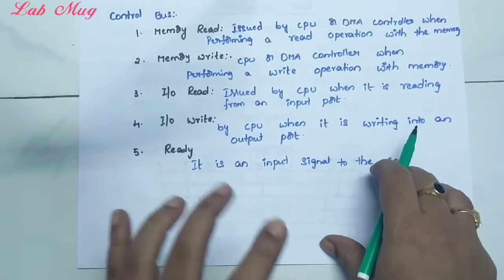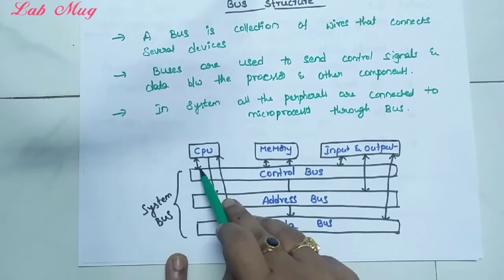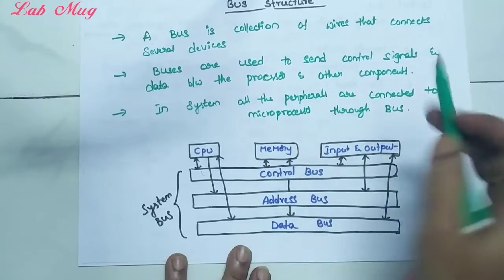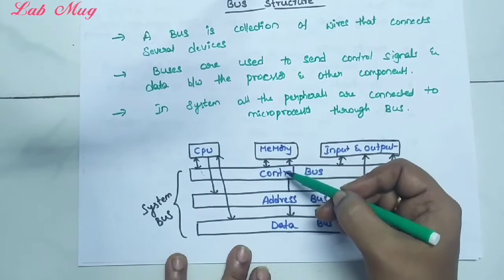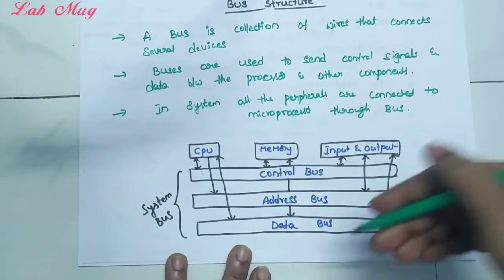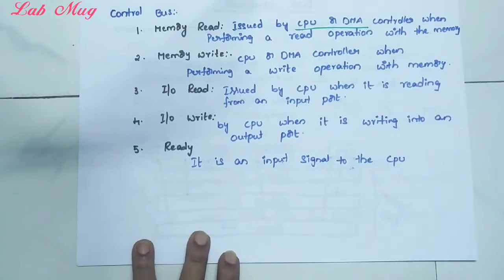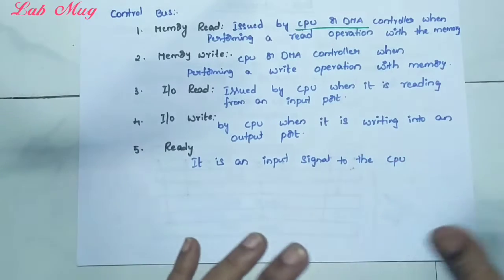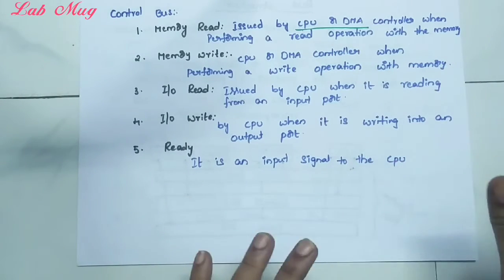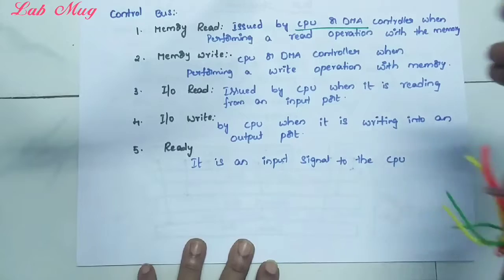Now let's see diagrammatically. From the central processing unit, the control bus goes up and down - if we want to read or write. From memory and input/output, reading and writing operations happen. From the input and output side, both data insertion and data outgoing occur. From the control bus, a memory read signal is issued from the CPU or DMA controller.